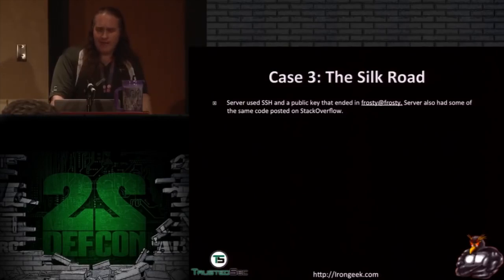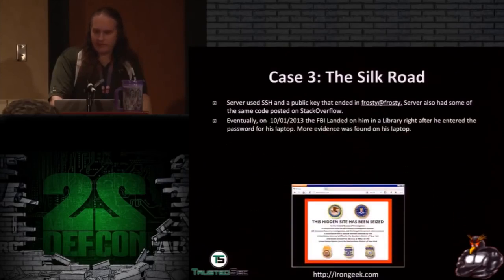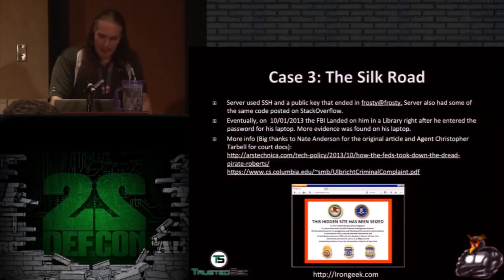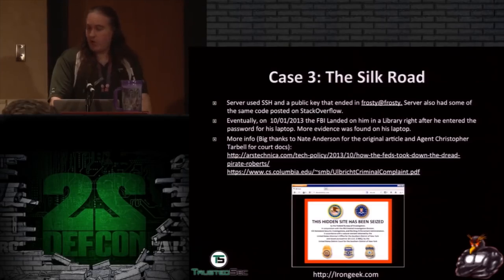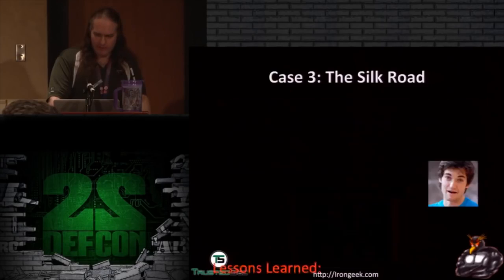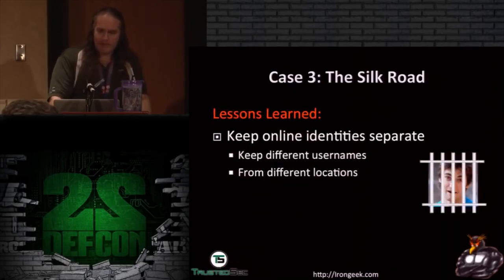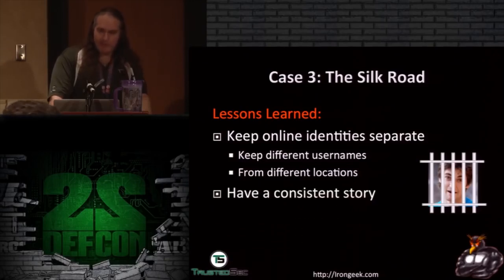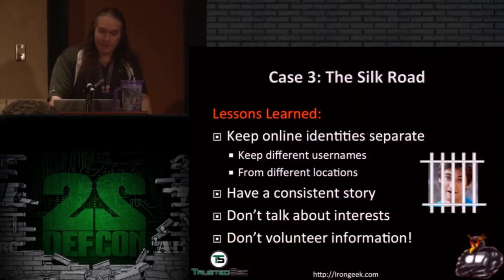One of the seized servers had 'Frosty' as a key name — a handle Ulbricht had used before. They finally arrested him in a library, right after he had entered his password on his laptop — capturing the machine in a decrypted state, for similar reasons as the Freedom Hosting case. Lessons learned: keep online identities completely separate; don't use Tor from locations tied to your real identity like Gmail logins; don't reuse handles across platforms; don't share personal interests that link your anonymous and real personas; and never volunteer incriminating information to law enforcement.